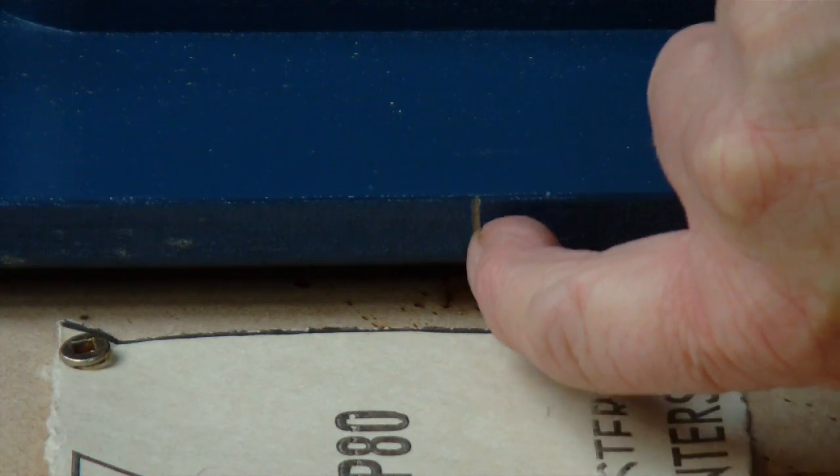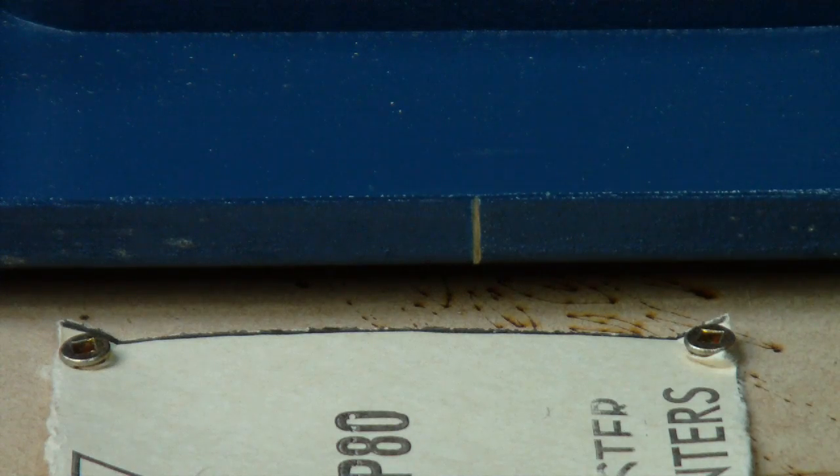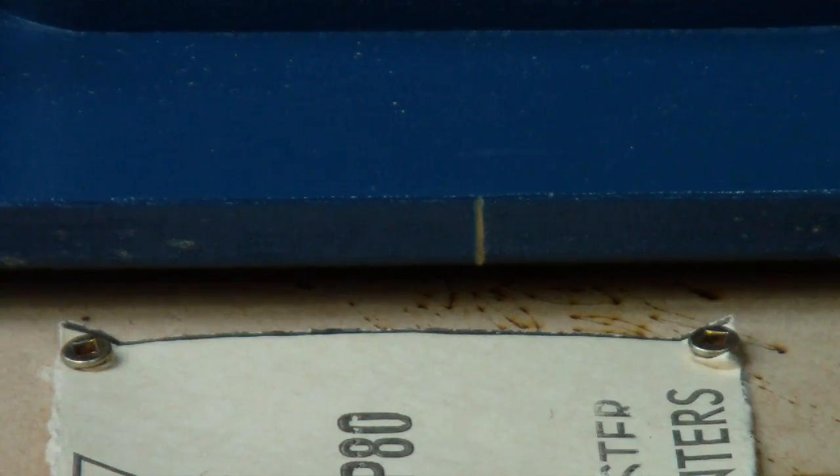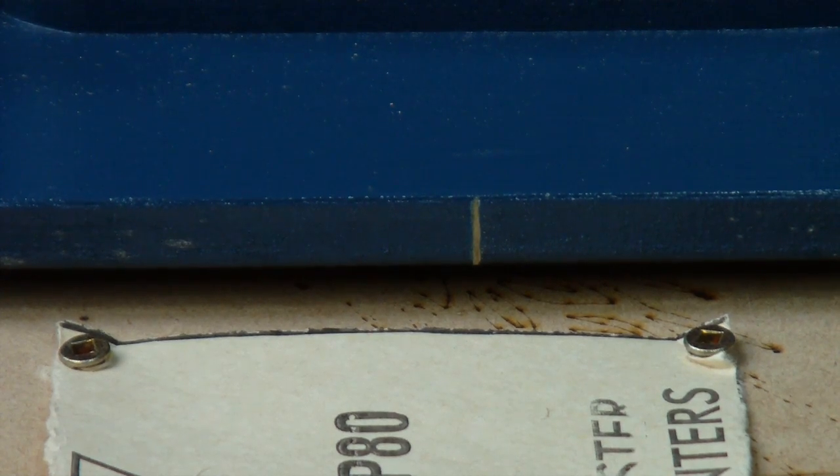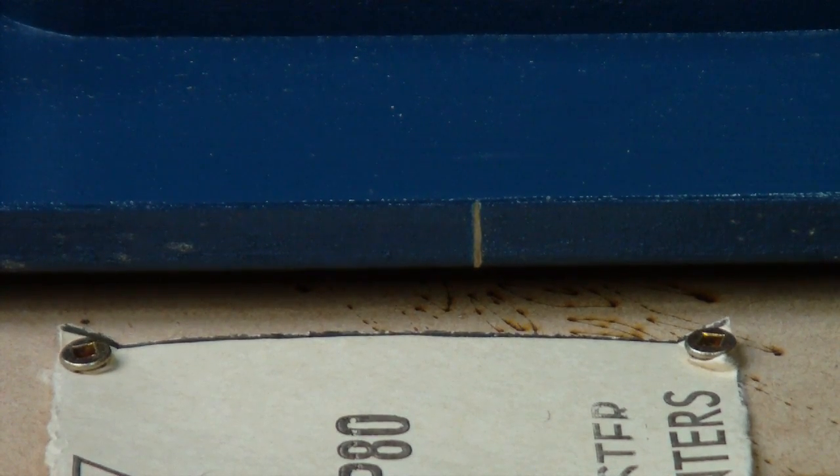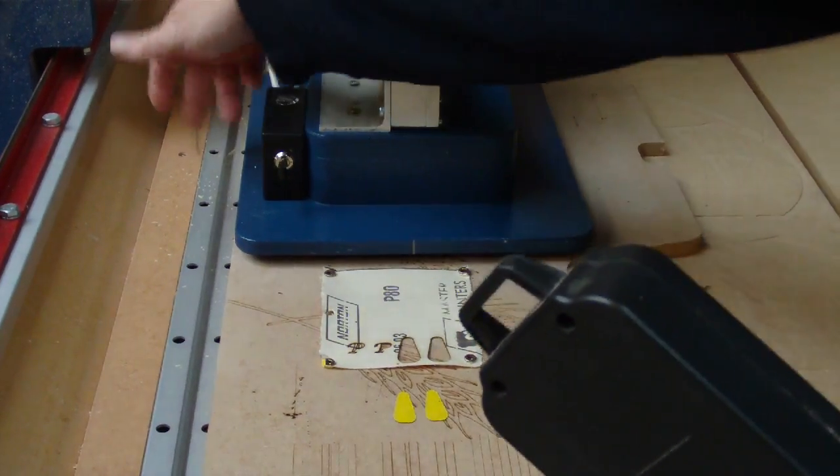And that's in dead alignment with the laser spot itself. And I have a corresponding line on either side of the Y sides of the bottom here. So, there's a line here and a line there.